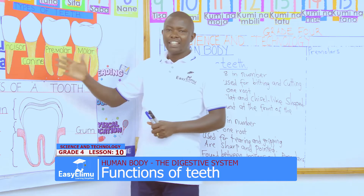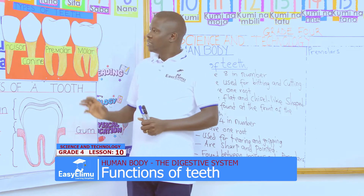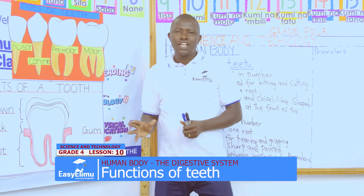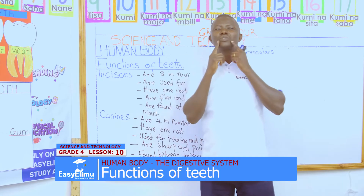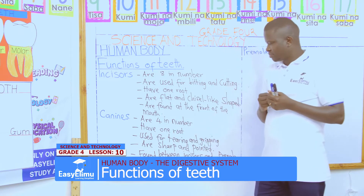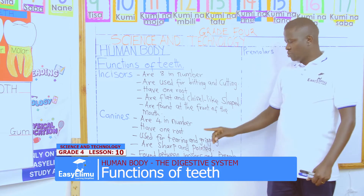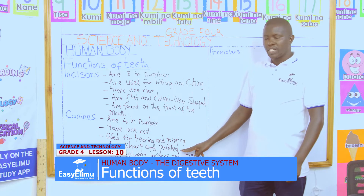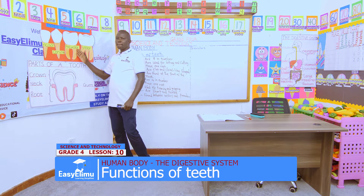We can also look at the canines. In their shape, they are sharp-pointed — that is one characteristic. They have one root. The canines are four in number: one at this corner, one at this corner, one at the top on this side, and one on the other side. Their function is tearing and gripping. If you want to tear flesh, you will use them. If you want to grip flesh, you will use the canines. They are sharp and pointed, and they are found between the incisors and premolars.